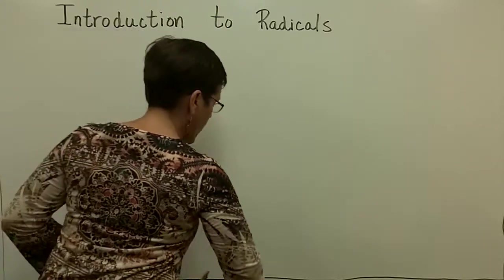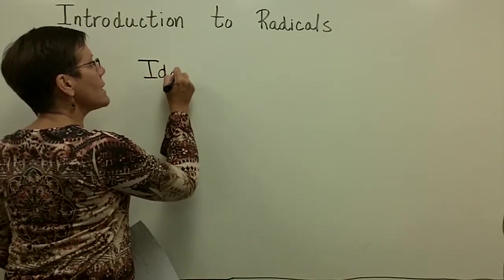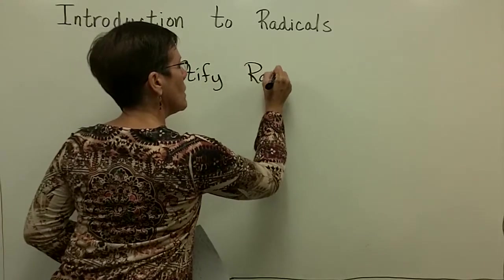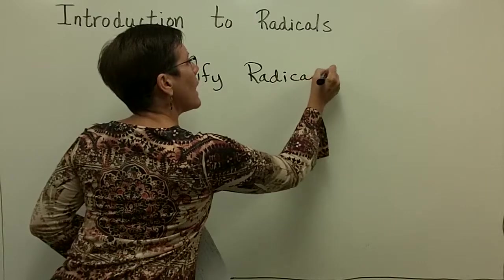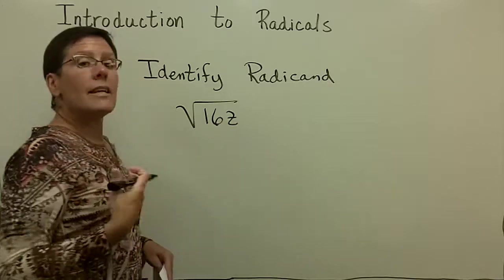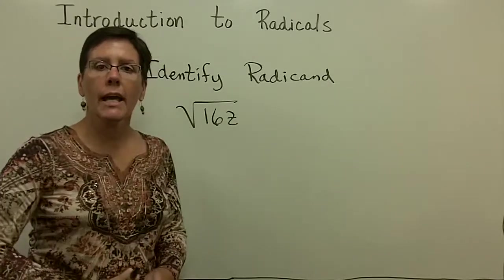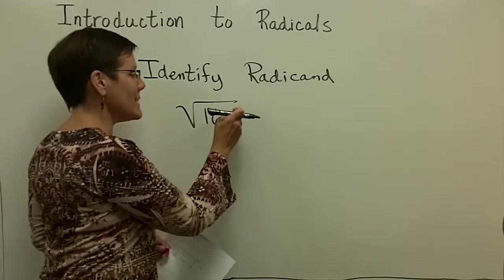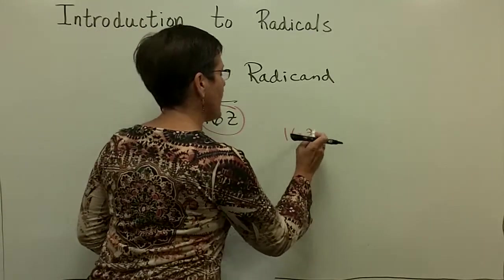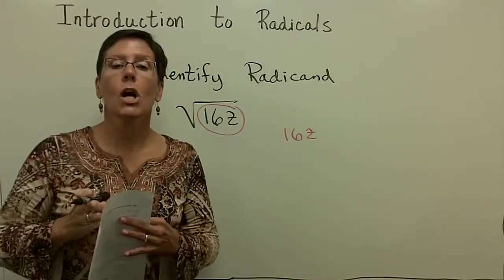The next thing that you might be asked to do in an introduction to this topic is to identify the radicand. And all the radicand is, in this example, is the expression that's under the radical. So in this particular case, the radicand is 16z. That's all. I'm just looking for the expression under the radical. It's called the radicand.